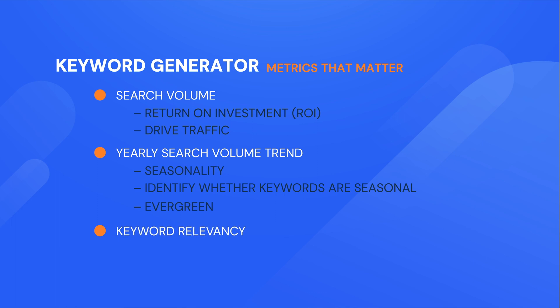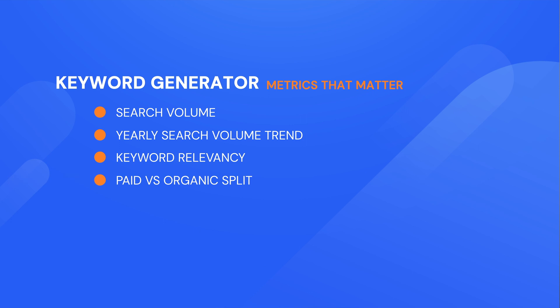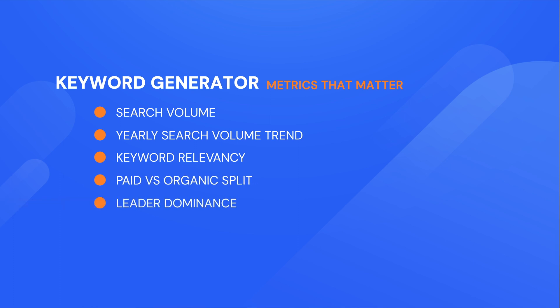Another really good metric that matters is keyword relevancy in relation to the buyer's journey — so what would the searcher do after they carry out a search for that keyword? Equally, if you're sharing keywords between organic and paid search teams, you want to find out what is the keyword's paid versus organic split. Have a look and be aware of who are the dominant leaders and how competitive this space is.